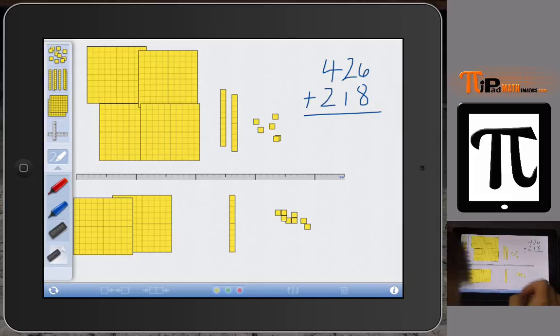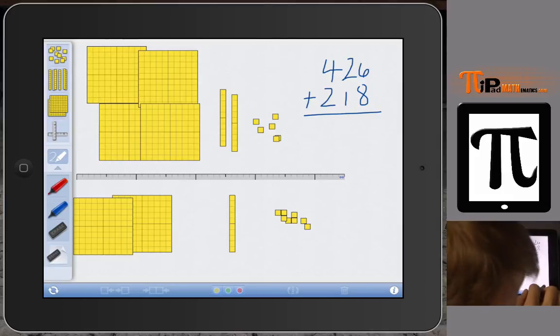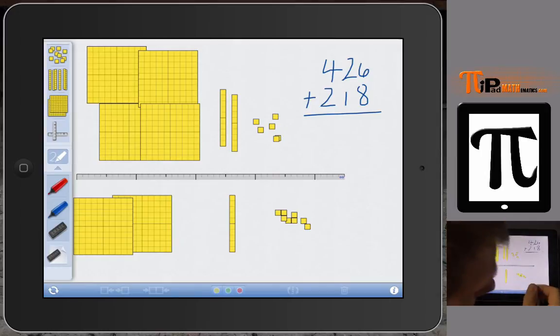This is where we get into using correct vocabulary. We want our early learners, our beginning math learners, to be able to understand the concepts behind the addition of whole numbers. When I say understand the concepts, that means we need to help them understand not so much the procedure, but the concepts behind the procedure.